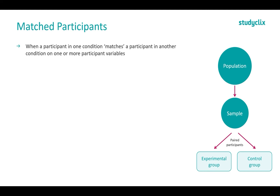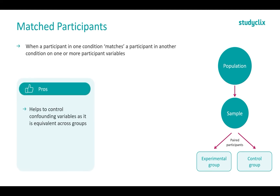We may pair them up on participant variables such as age and gender — for example, one 36-year-old male in the experimental group and one 36-year-old male in the control group, or a 14-year-old girl in each group. You can also do this with intelligence, pairing people with similar IQs, or similar life experience. A pro of this design is that it helps control confounding variables, as they are equivalent across groups. If intelligence was a relevant confounding variable, we'd ensure both groups had similar intelligence levels.